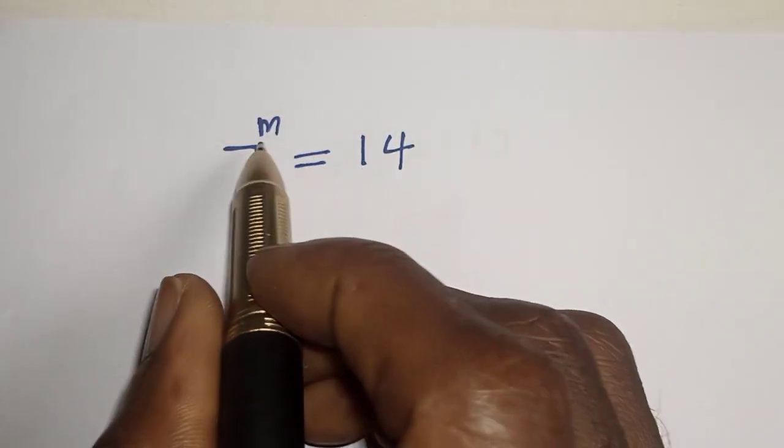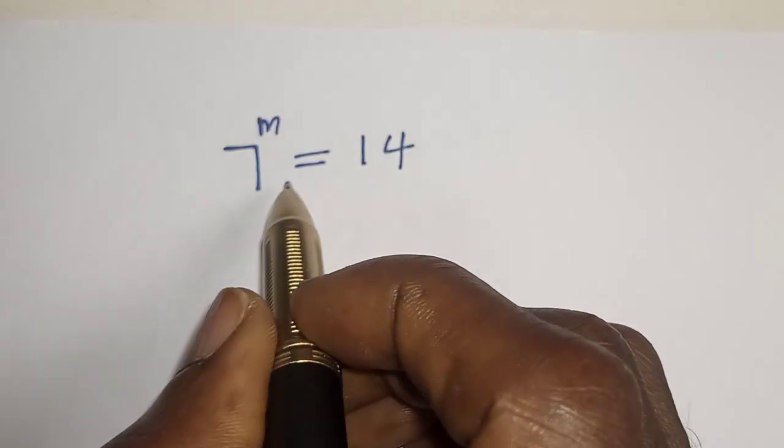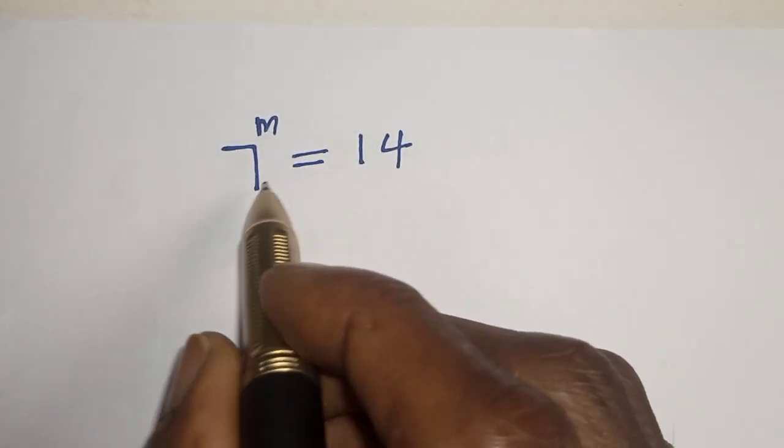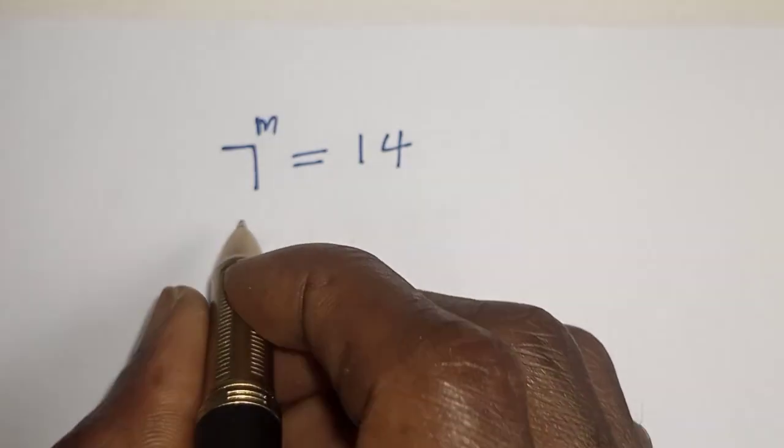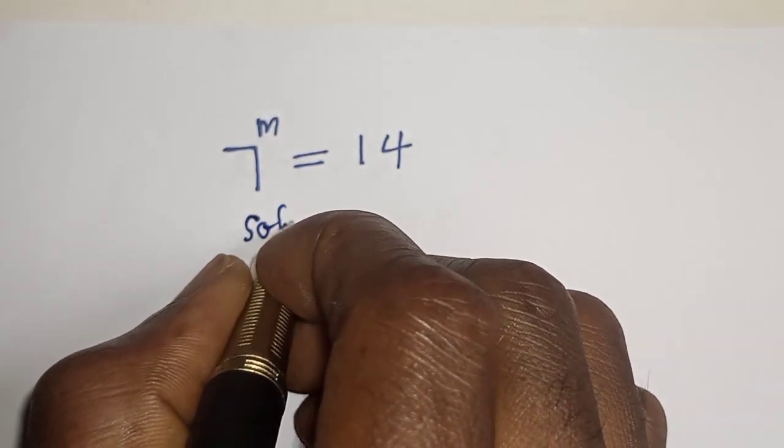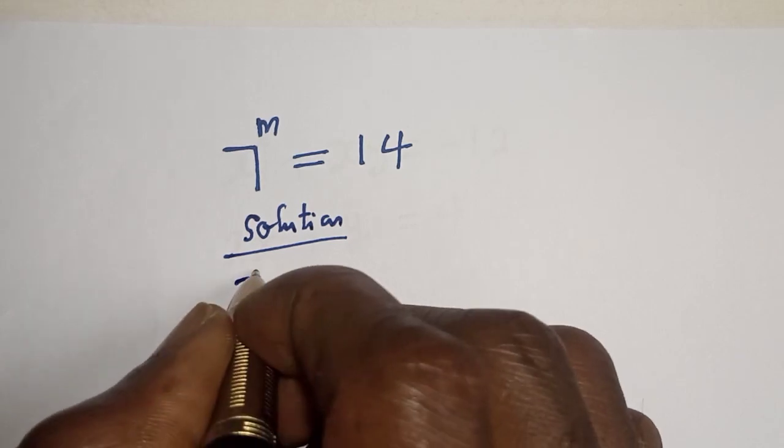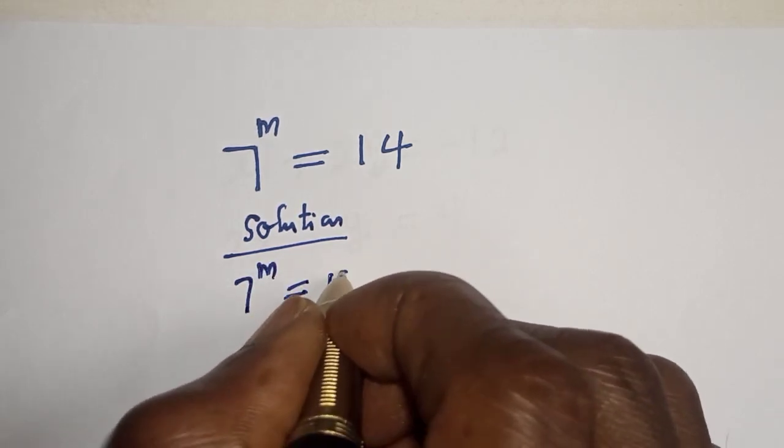7 raised to power m is equal to 14. What is the value of m? Hi, everyone. Welcome to my class. In this class, we want to find the value of m from this equation. 7 raised to power m is equal to 14. Solution.